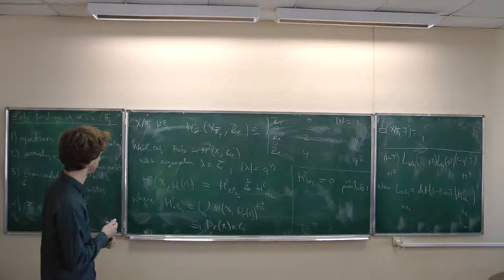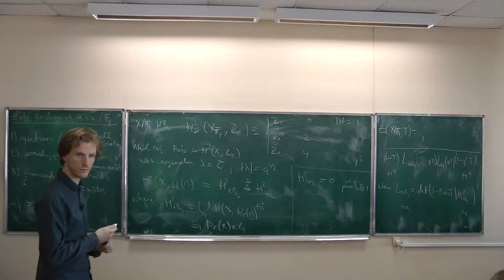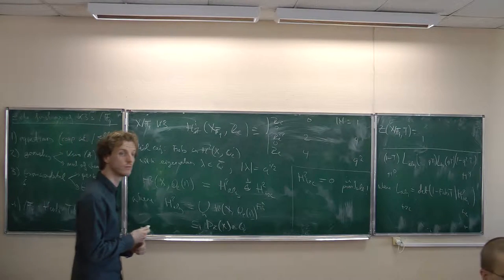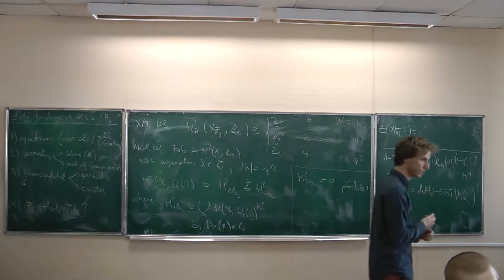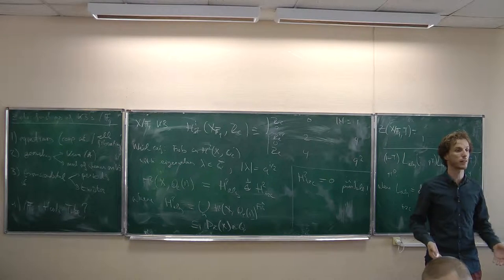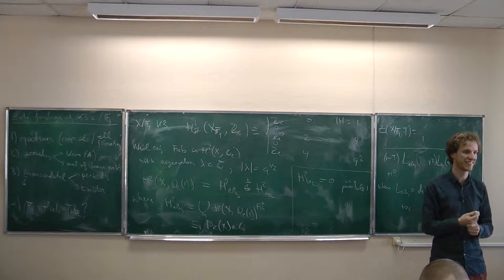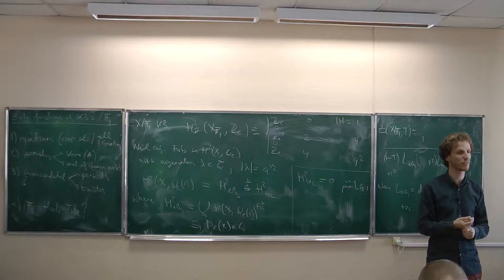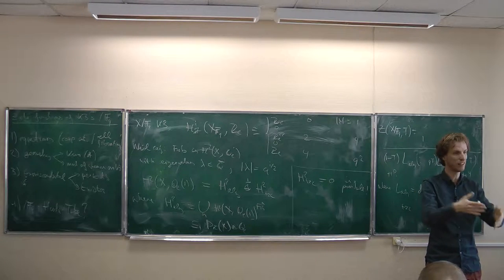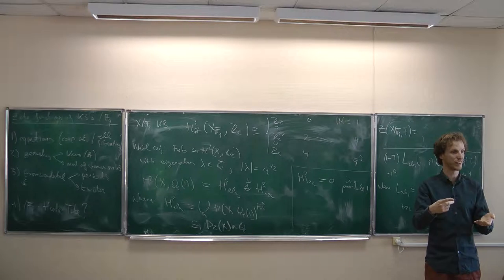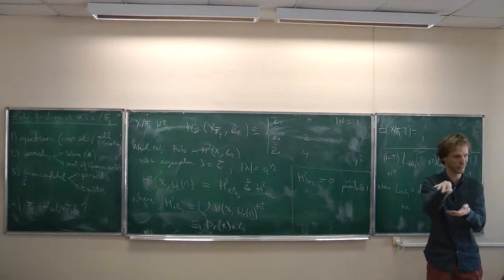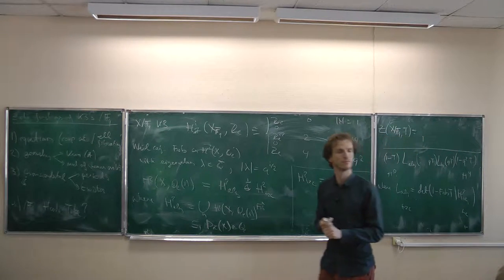Audience question: how does this compare with what was said yesterday? The transcendental part can shrink and the Picard rank part can go bigger — you can have more cycles in characteristic p than in characteristic 0. So this decomposition need not be horizontal in families. Also in a family, you can have specializations that have bigger Picard rank — the transcendental part is extremely chaotic.